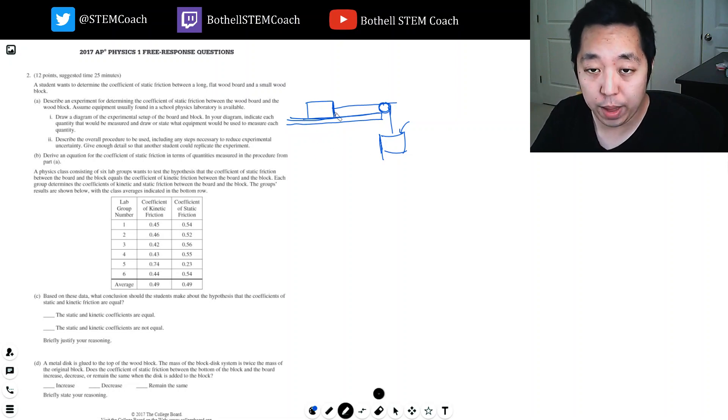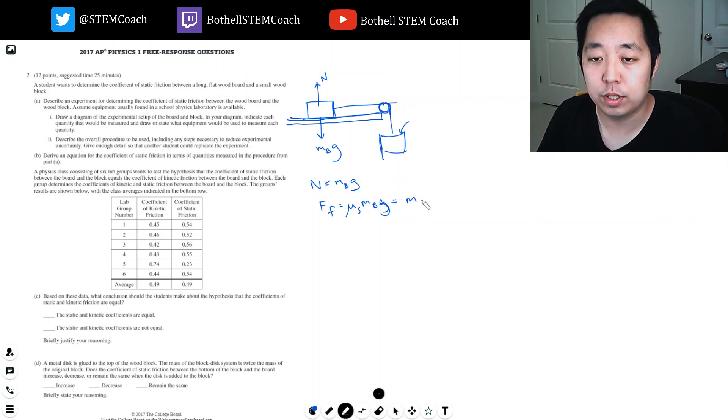And if I know the mass of this block, then I know that the normal force is equal to just the mass of the block times G. So N equals MBG. And the force of friction would be mu static times MBG, like mu times the normal force. And G actually cancels.